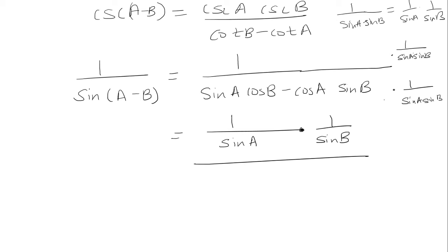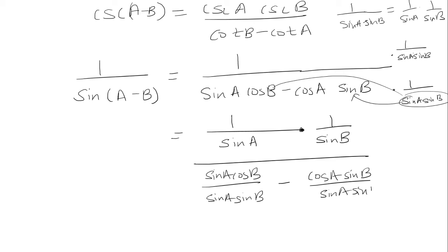Then for the denominator, I'm going to distribute this to both of the terms. So it's going to be sine A cosine B over sine A sine B minus cosine A sine B over sine A sine B.